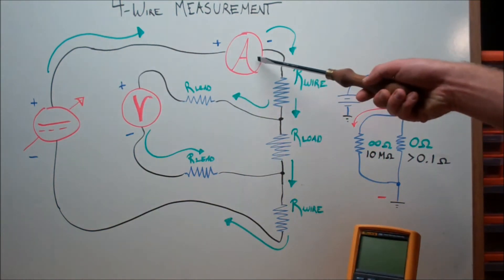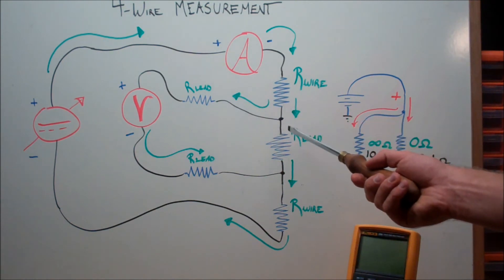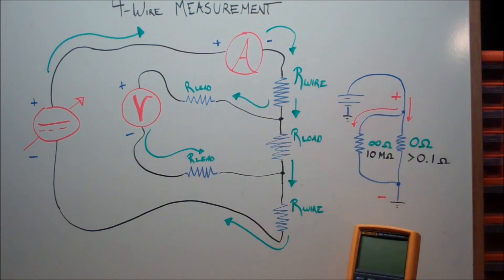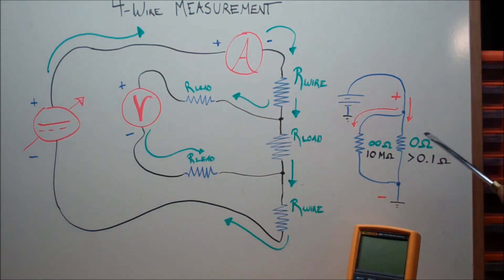So when we have current flowing from our source and going into our circuit, it's actually being divided at this node right here. Some of the current is going into the voltmeter while some of the current is going through our load. In this case, we can pretty well ignore this, and the reason is the resistance comparison.